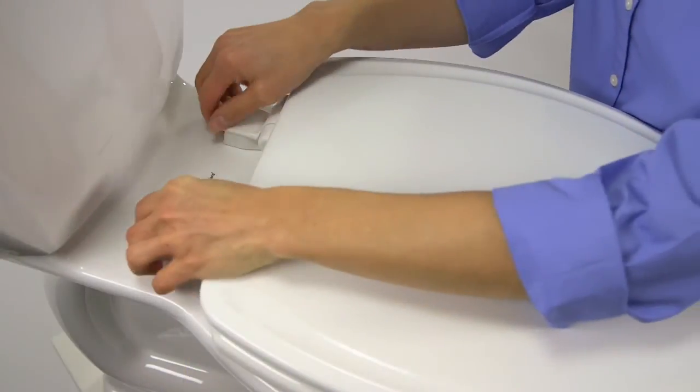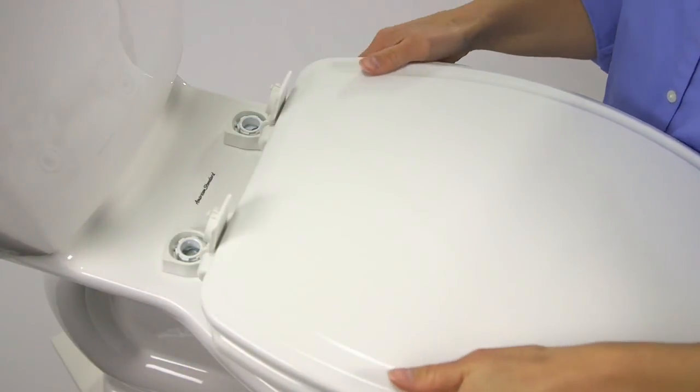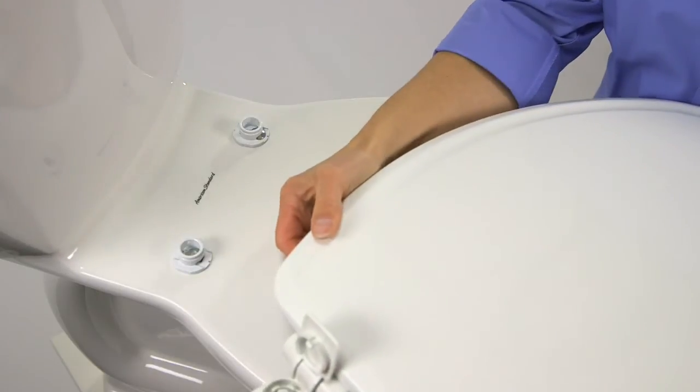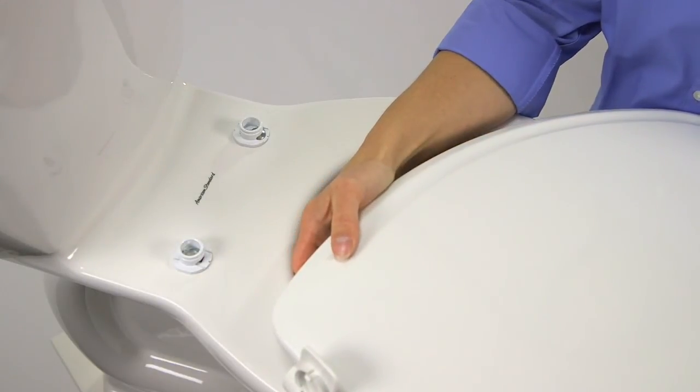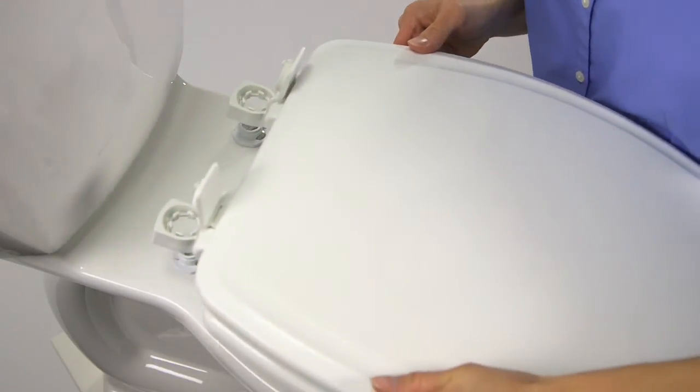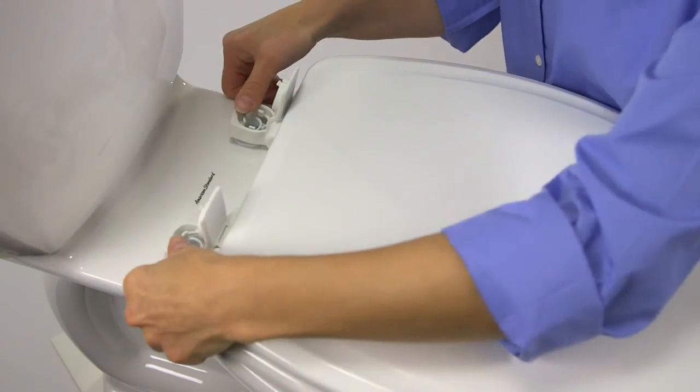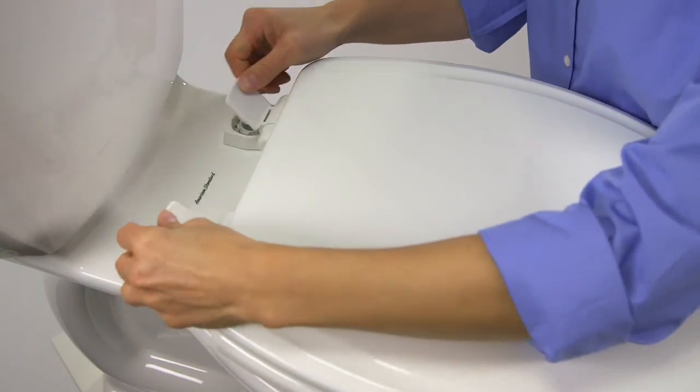Finish the job by checking the function of the easy clean and change feature. Simply lift the two hinge caps, then give the seat a light tug to snap it away from the bolt head. It should easily remove for cleaning or replacement and snap back down just as easily for a solid fit.